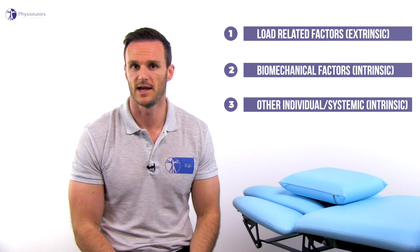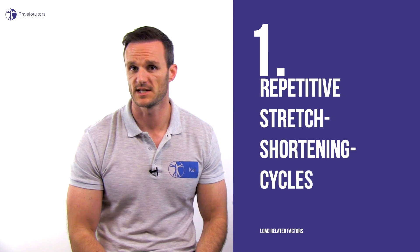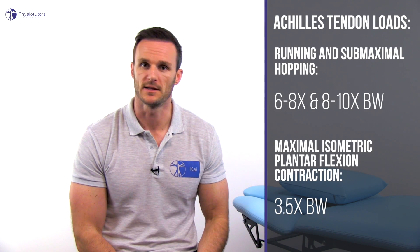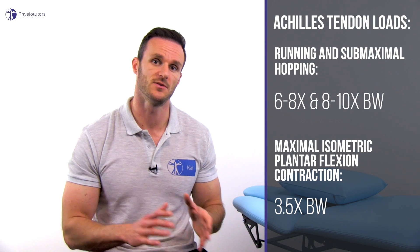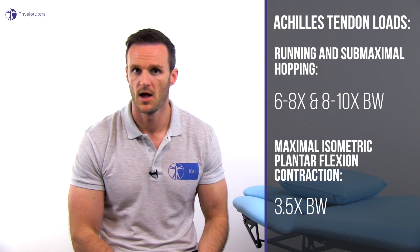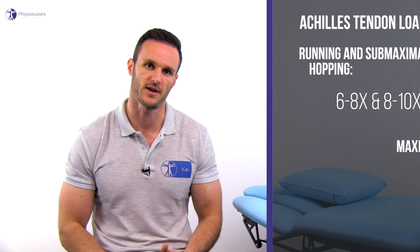Let's start with load-related extrinsic factors. Repetitive stretch-shortening cycles of the muscle-tendon unit, such as walking and running for Achilles tendinopathy or jumping for patellar tendinopathy, are associated with tendinopathy. The tendon load may only explain part of the story. In running and submaximal hopping, the Achilles tendon load is reported to be 6 to 8 times and 8 to 10 times body weight, respectively, while the load during maximal isometric plantar flexion contraction is only 3.5 times body weight.